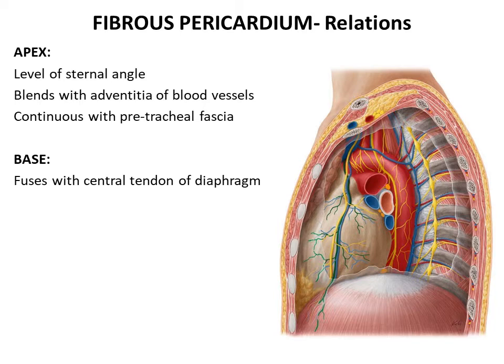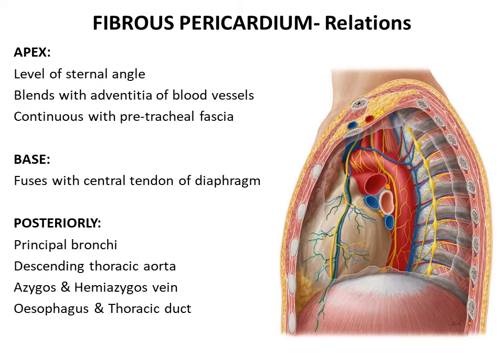Posteriorly, the fibrous pericardium is related to the posterior mediastinum and the root of the lung, which contains the principal bronchi. The posterior mediastinum contains the descending thoracic aorta, the azygous and hemiazygous veins, and the viscera — the esophagus and thoracic duct.